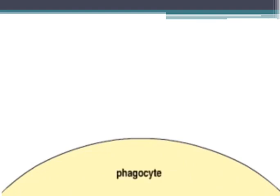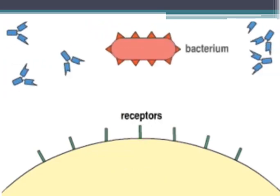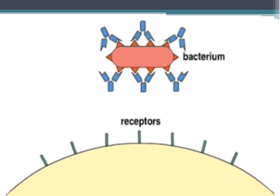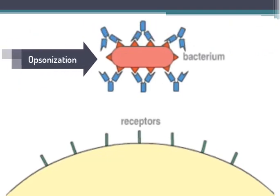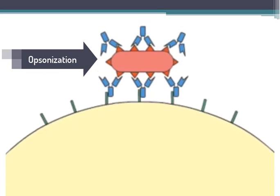A phagocyte has cell receptors to which the constant region of some antibodies can bind. Those antibodies bind to epitopes of pathogens at their variable region at the same time, thus making a molecular bridge between the macrophage and their target. This is opsonization.